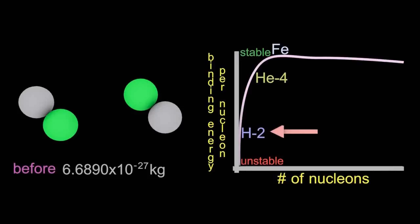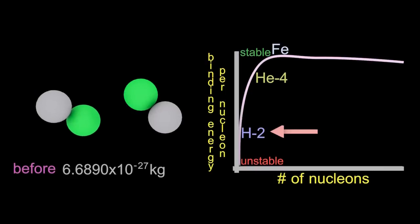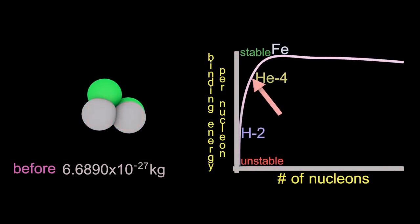Looking again at the first example, where two deuterium nuclei collide, there's the mass before, and when they come together to form a helium nucleus, the mass of this helium nucleus is slightly lighter. Where did the mass go? Well, the mass turned into energy. That's what that little red flash was. And as a side note, the nucleus has now become more stable as it's edged towards iron on the binding energy per nucleon diagram.